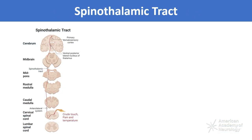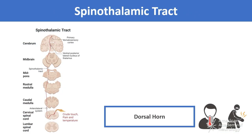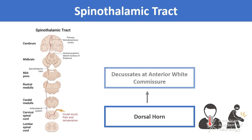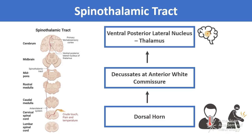The spinothalamic tract begins in the dorsal horn of the spinal cord. This tract decussates at the anterior white commissure of the spinal segment in which it starts, before traveling anterolateral to the ventral horn of the spinal gray matter. This tract terminates primarily in the ventral posterior lateral nucleus of the thalamus. The ventral portion carries sensation for crude touch, and the lateral portion carries sensation for pain and temperature.